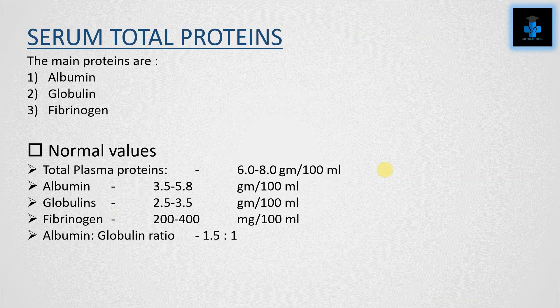Next is serum total proteins. The main proteins in our body are albumin, globulin, and fibrinogen. The normal values of total plasma proteins are 6 to 8 grams per 100 mL. The normal value for albumin is 3.5 to 5.8 grams per 100 mL; for globulins it ranges from 2.5 to 3.5 grams per 100 mL; for fibrinogen it is 200 to 400 mg per 100 mL. The albumin-to-globulin ratio is 1.5:1.